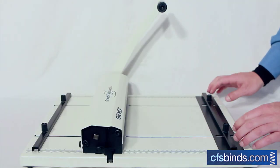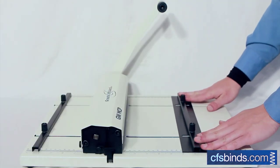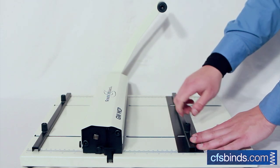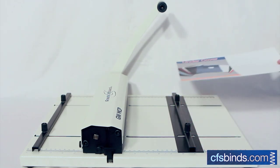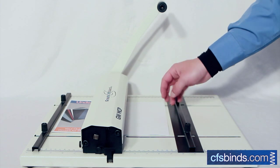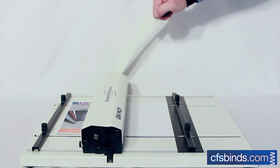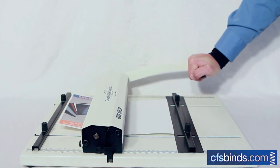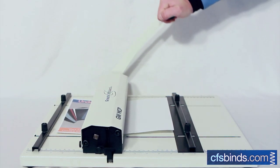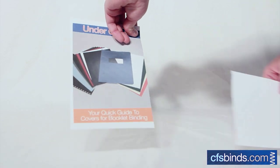Before we can perforate, we must first adjust the paper guide to perforate the page in your desired location. Now insert your sheet face up, resting one edge on the paper guide. Pull down on the handle with a little bit of force, and your sheet is perforated.